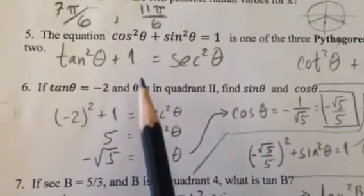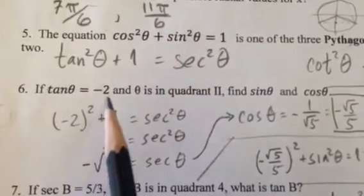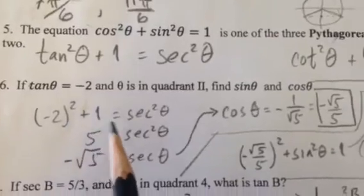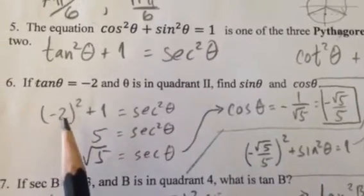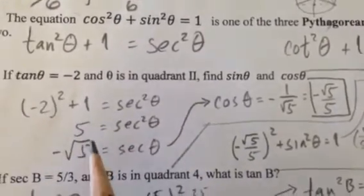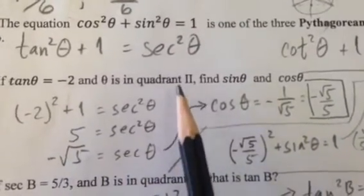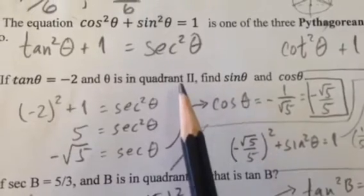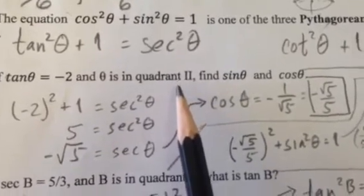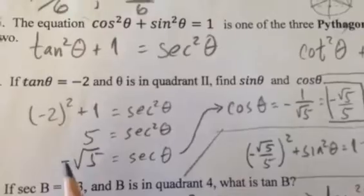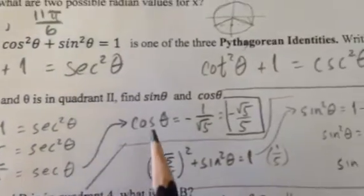I'm going to use this identity right here. Tangent squared means negative 2 squared plus 1 equals secant squared. Well, that's positive 4 plus 1 is 5. Square root of that is square root of 5. Why is it negative square root? Because it's in quadrant 2. And in quadrant 2, cosines are negative. And that means secants are also negative. So it's negative square root of 5.